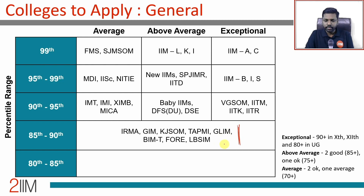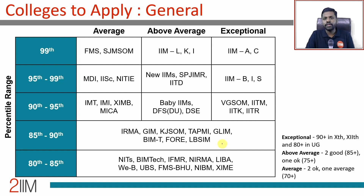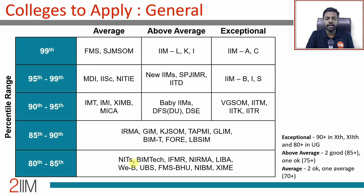The 80 to 85th percentile range is a tricky spot — you have done reasonably okay but are unsure which colleges will call you. Look at these colleges: LIBA — Loyola Institute of Business Administration — Nirma, IFMR Chennai, BIMTech Noida, and some NITs like Trichy, Warangal, and Surathkal, which have business schools. Also consider Welingkar Bombay, UBS Chandigarh, FMS BHU, NIBM, and XIME if you are between 80 and 85th percentile.